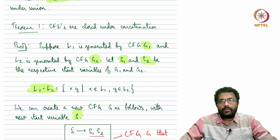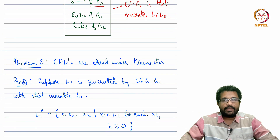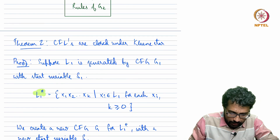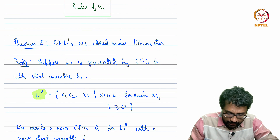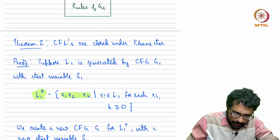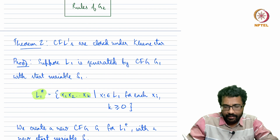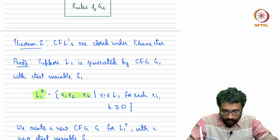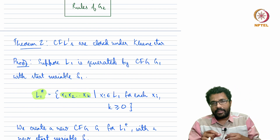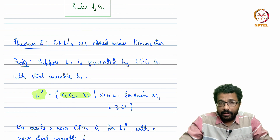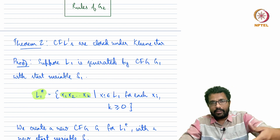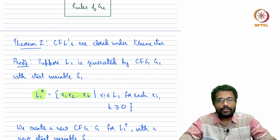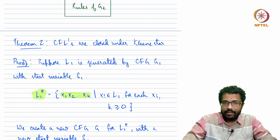That is how context-free languages are closed under concatenation. The next closure property is the Kleene star. Given a language L1, the star of L1 is strings of the form x1 x2 ... xk where each of these xi's are part of the language L1. Basically it is k strings from the same language one after the other, where k could be 0, 1, 2, and so on. When k equals 0 we get the empty string.